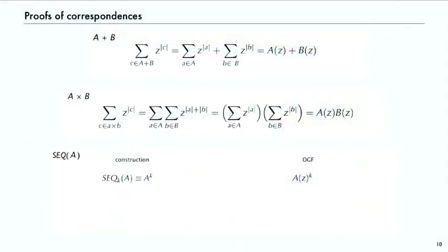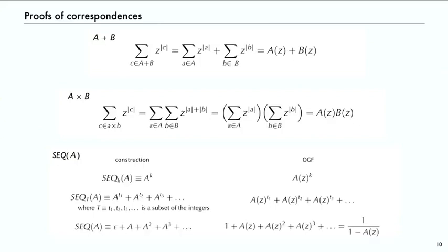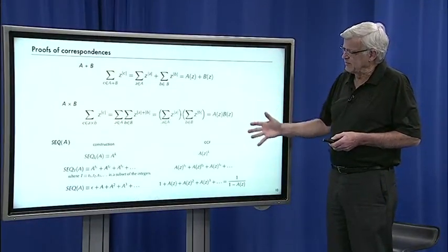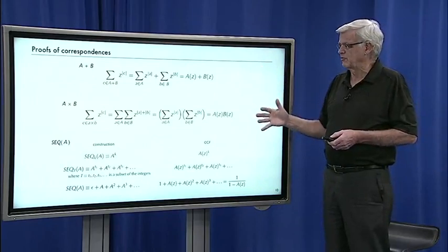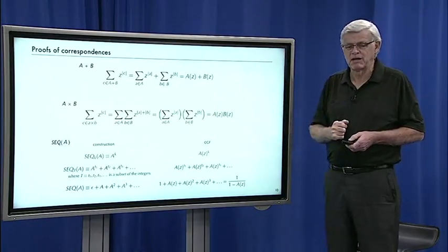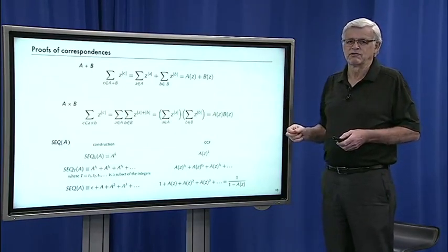For sequence, if you take a sequence of size K, then just extending the product operation, you get A(z) to the K. Sequence is 0 plus 1 plus so forth, actually for any sequence of integers. So if you take any size, it's just 1 + A(z) + A(z)^2 and so forth, which is just 1/(1 - A(z)). That's the correspondences for the basic operations that show that if we apply one of these operations, then we immediately imply a relationship on the generating function.